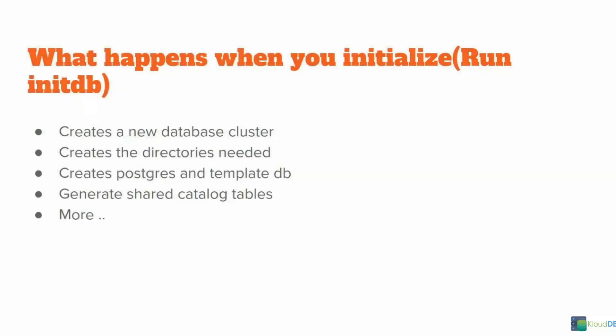Now we're going to talk about the directories that get created when you run initDB. Initially, when you set up Postgres and initialize the cluster, you run a command called initDB. When that runs, these are the things that happen in the background: it creates a new database cluster, creates directories that it needs, creates Postgres and template DBs, generates shared catalog tables, and there are more steps. We are going to talk about all the directories and files that get created.